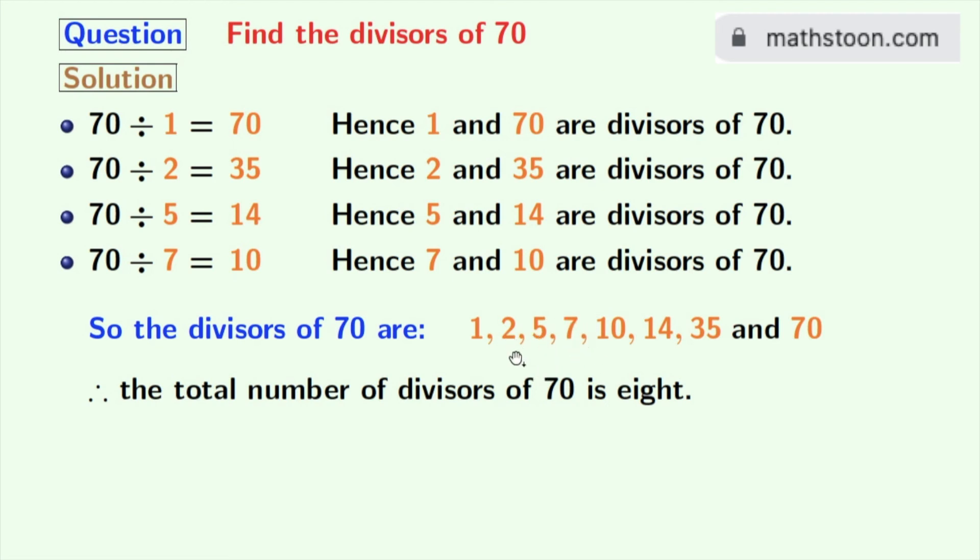So we can say that the prime divisors of 70 are 2, 5, and 7.